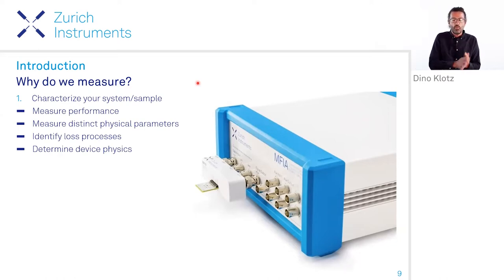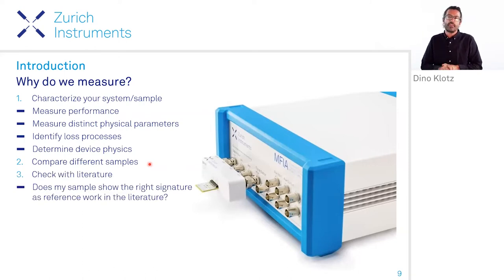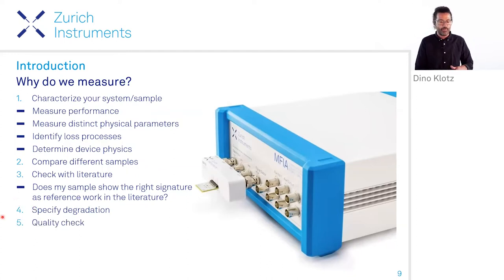Well, if you have a system or sample, you want to measure the performance. For example, a battery should be well performing, and that can be done through the electrical signals. You want to maybe measure a material and measure its distinct physical parameters, such as the conductivity or dielectric constant. If you have manufactured your own battery, you might want to know what happens and identify the loss processes that are occurring. Or if it's a very new system, a very new material, you will generally want to determine the device physics. If you have a running system and you want to improve it, you maybe run a batch with a variation of certain parameters, and you want to compare different samples. On the other hand, if you just replicate something that someone did in the literature, you want to measure and see if your own sample behaves the same way and shows the right signature as the reference work in the literature. Once it's working, you maybe want to specify degradation over time, and if you eventually want to sell it, maybe you want to do a quality check before getting it off house.